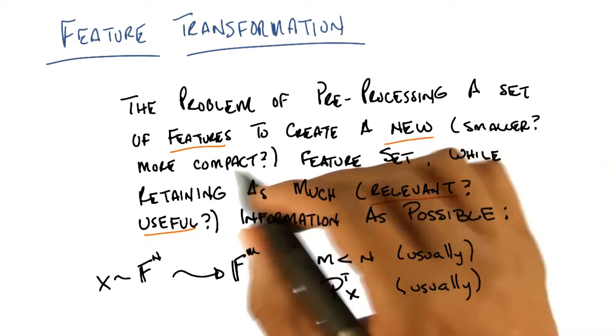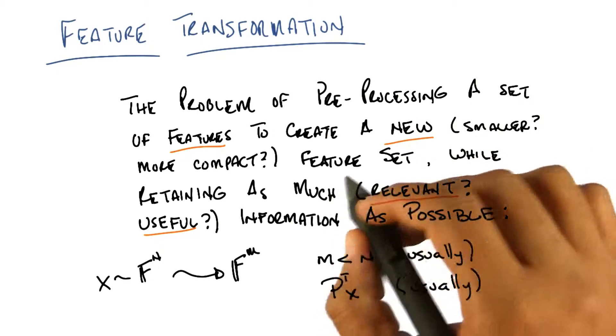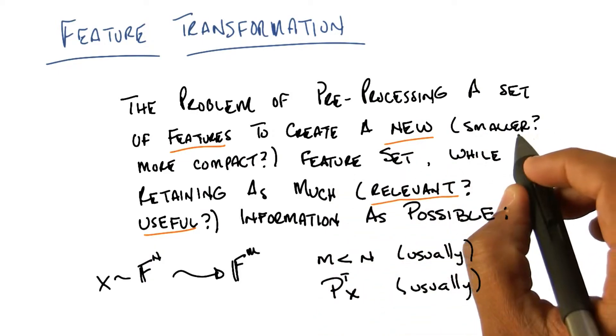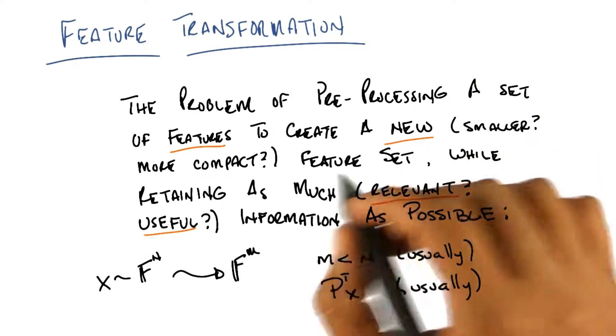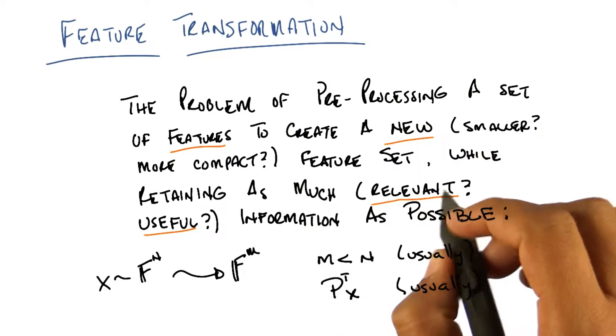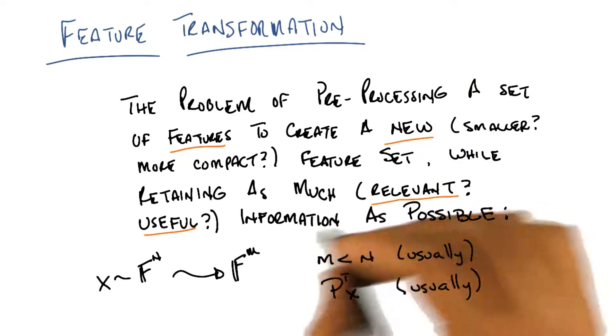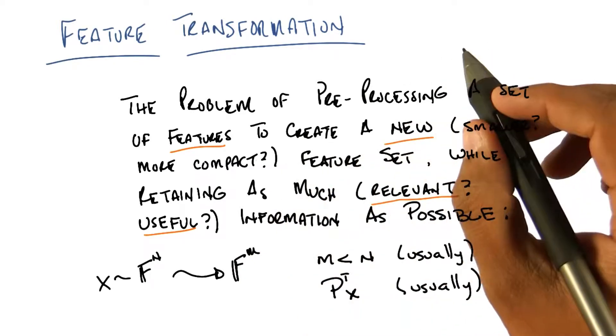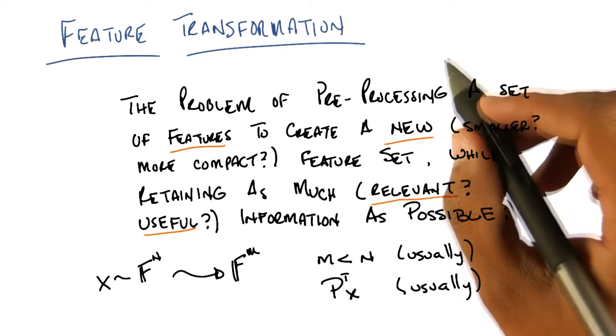I take a set of features in feature selection, then I create a new feature set, which happens to be smaller. And my goal was to retain as much information as possible. And we talked about the difference between relevant features and useful features. But really, this sort of describes feature selection as well. You see that?